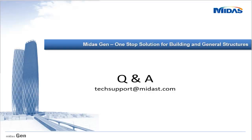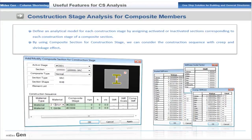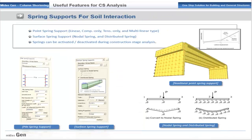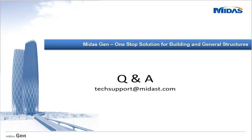For the composite function, the advantage is that in construction stages, according to the construction sequence, we can activate or deactivate the inner steel section — basically activate the steel section first and then activate the concrete part. This does include the effect of creep and shrinkage. Stiffness scale factors can be applied to the parts, and the program provides both partial stiffness properties and composite stiffness properties. Due to time constraints, I'll end the session here. Answers to remaining questions will be sent by email — for further queries, write to techsupport@midasit.com.